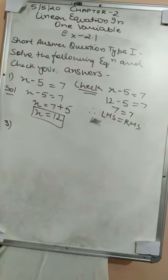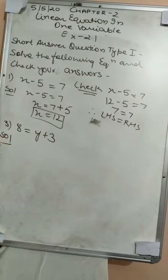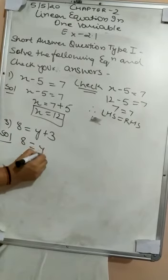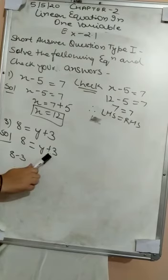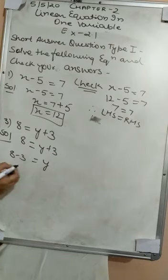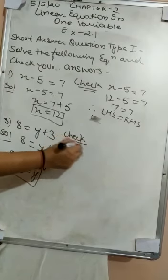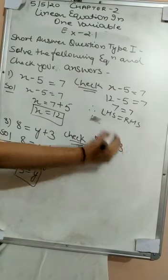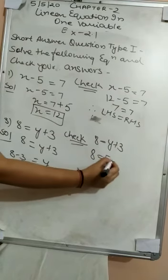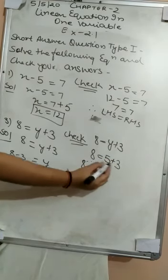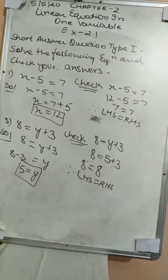Third question: 8 equals to y plus 3. We take the constant 3 to the left side — it is positive on the right, so it becomes negative on the left: 8 minus 3 equals to y. So y equals to 5. Now we check: the equation is 8 equals to y plus 3. In place of y we keep 5: 8 equals to 5 plus 3, which is 8. Therefore LHS equals to RHS, which means the value y equals to 5 is correct.